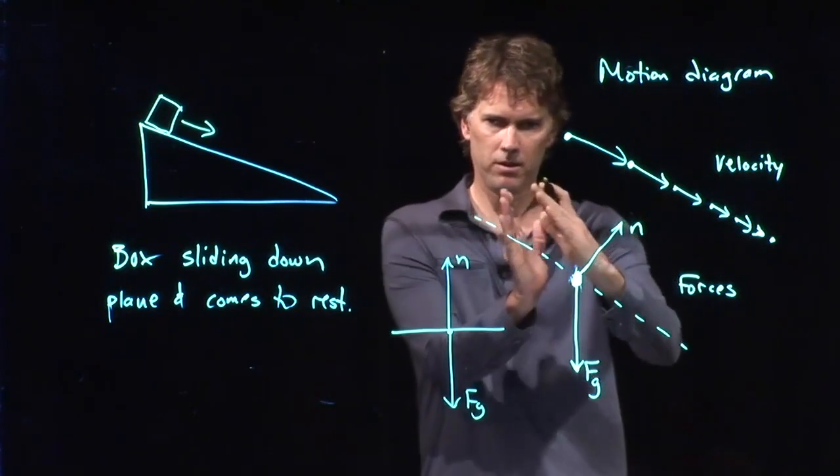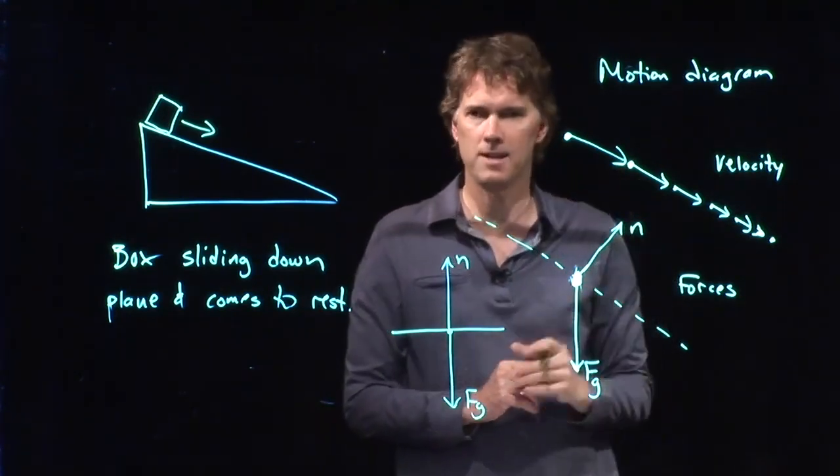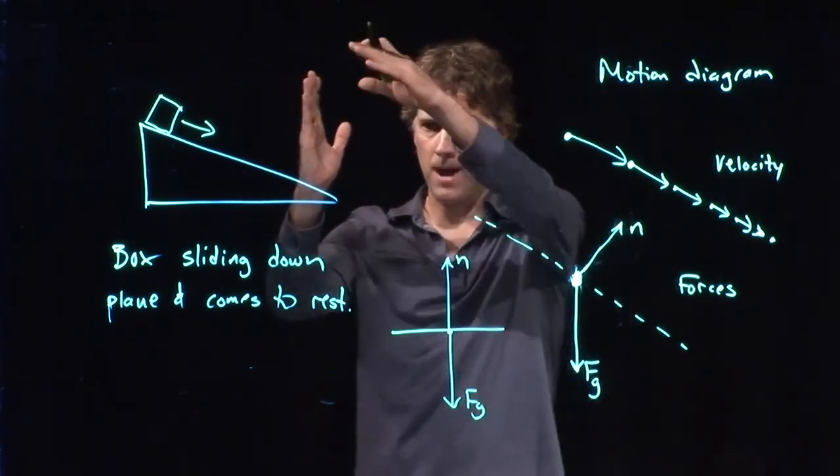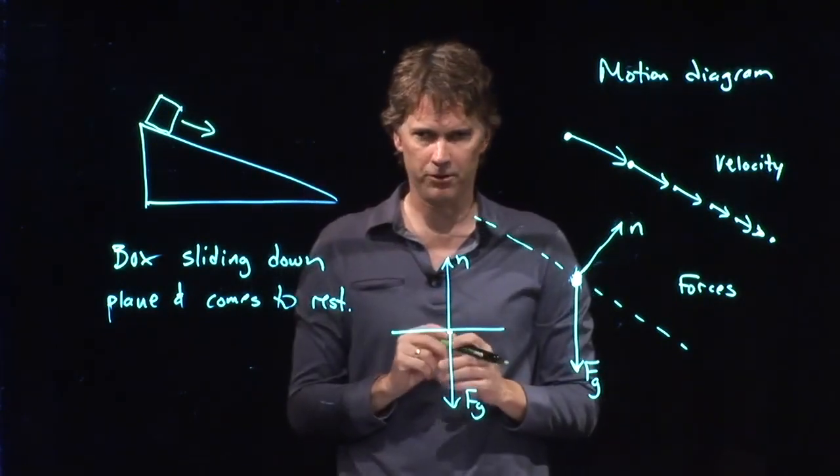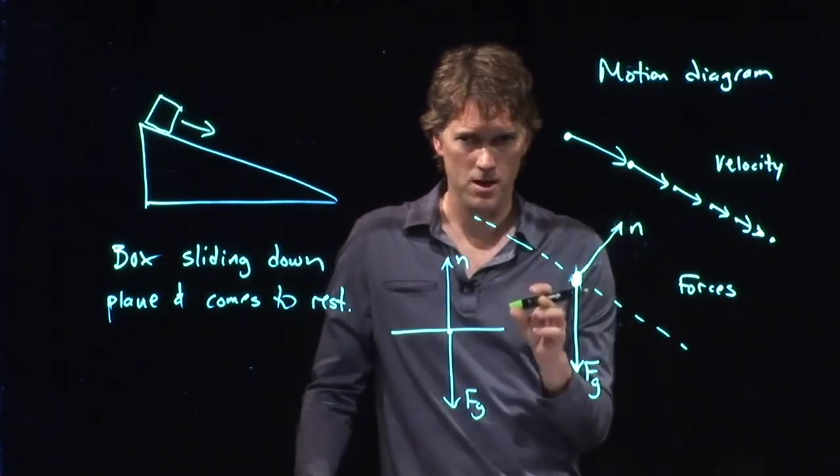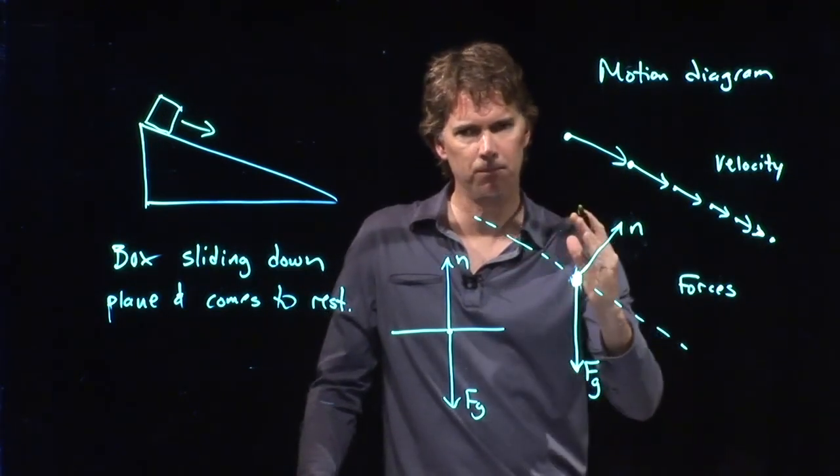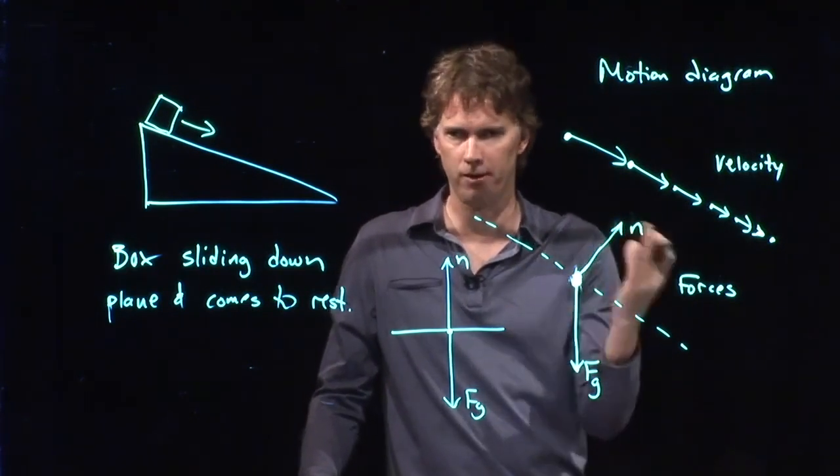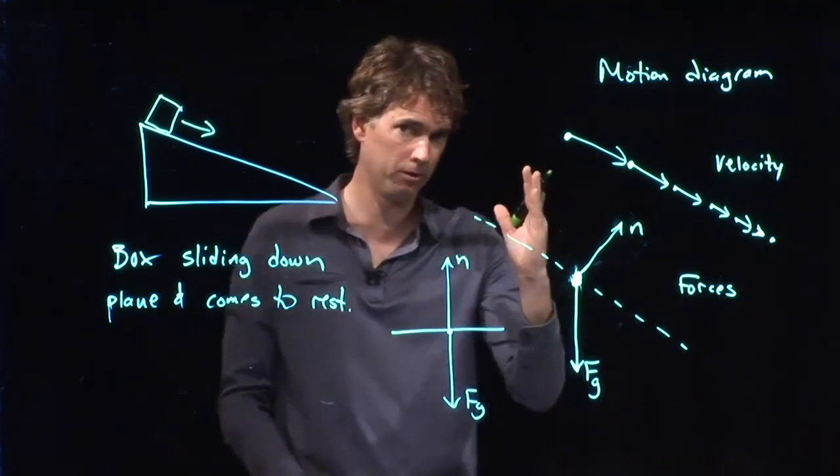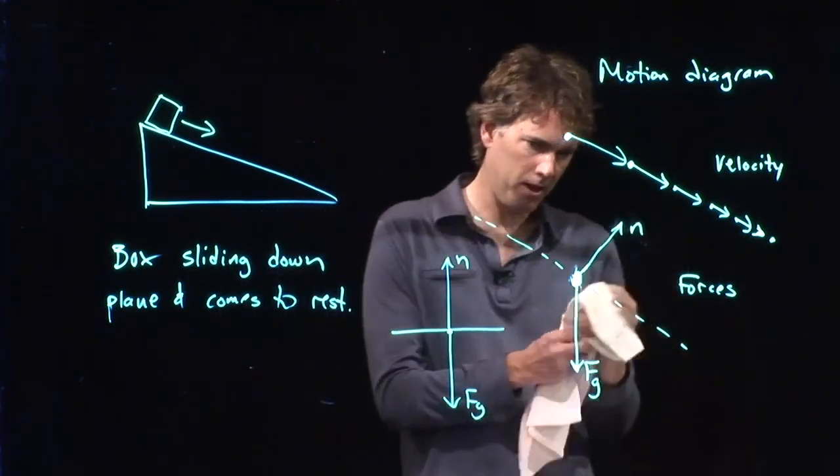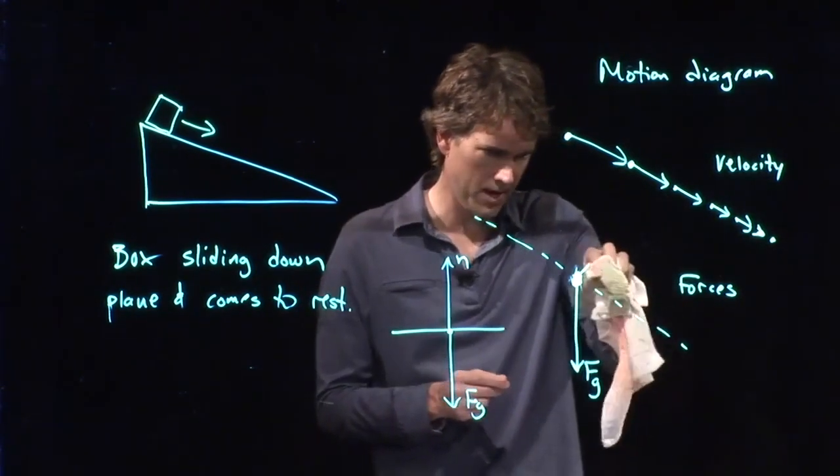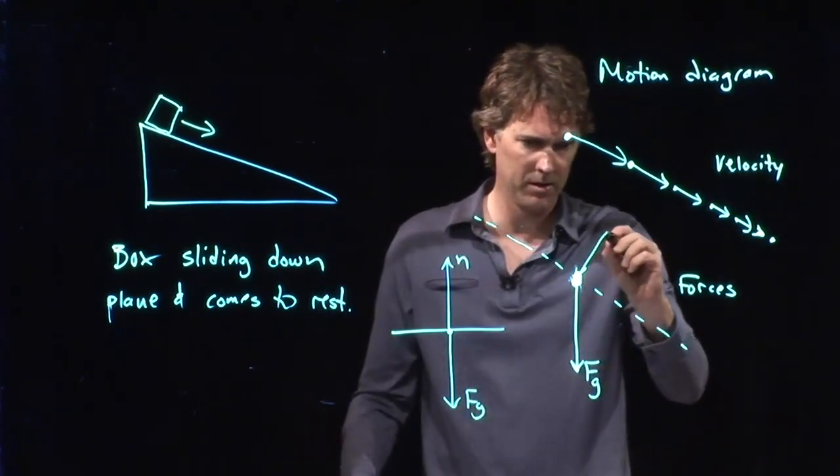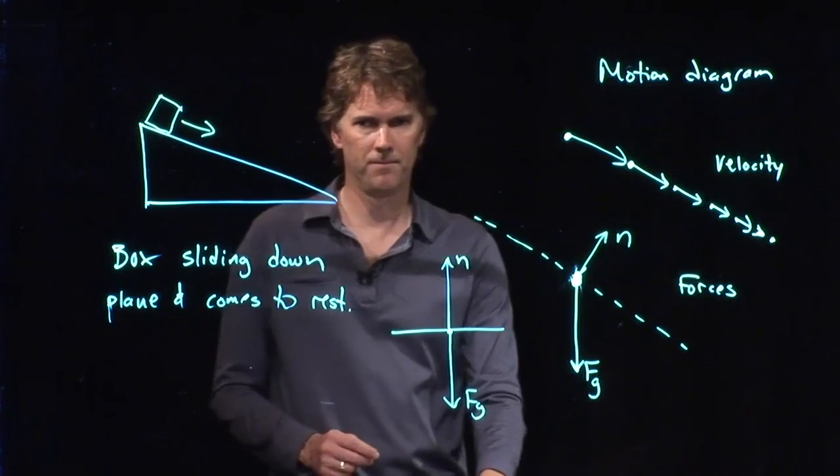But as I tilt this thing, eventually it's going to lose contact with the surface, right? If I go all the way vertical here, the box is going to slide straight down. It's going to lose contact with the surface, which means the normal force has to go to zero. So as I tip it up, the normal force has to get smaller and smaller and smaller, eventually reaching zero once we get to the vertical. So I would say that it should not be the same length as gravity. It should in fact be just a little bit smaller. Maybe something like that.